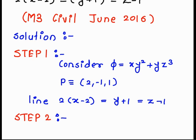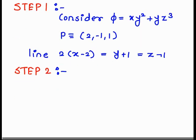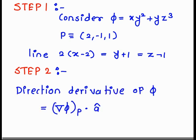In Step 2, we write the formula or the method we use: the directional derivative of phi is del phi at point P dot â. The difference from the previous parts is that in this example, we first need to find ā.